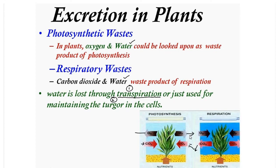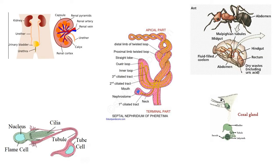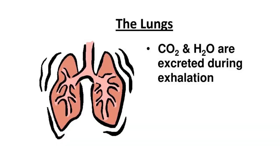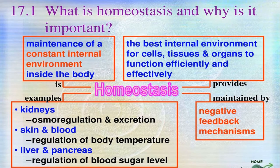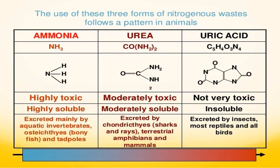All the metabolic wastes that are excreted in the form of water solutes through the excretory organs — nephridia, Malpighian tubules, kidneys, etc. — with the exception of carbon dioxide, which is excreted together with water vapour through the lungs. The elimination of these compounds enables chemical homeostasis in the organism, or maintenance of an equilibrium. The nitrogen compounds through which excess nitrogen is eliminated from the organism is called nitrogenous waste.